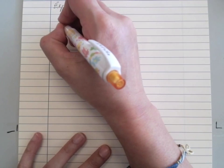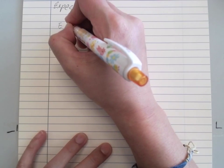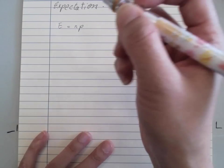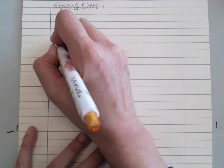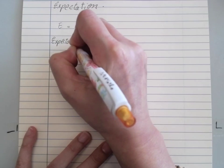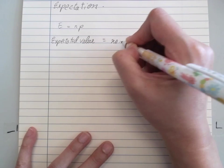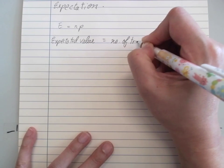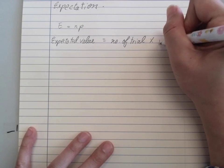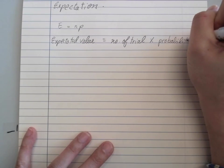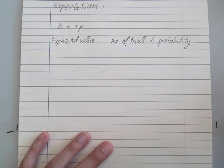We have E of an event equals NP. In human language, expected value equals number of trials times the probability of a certain event.